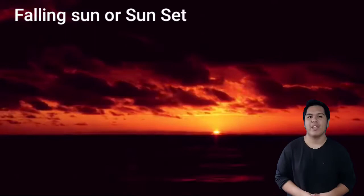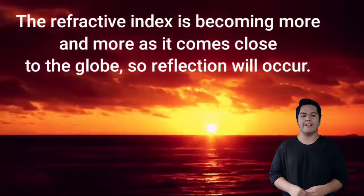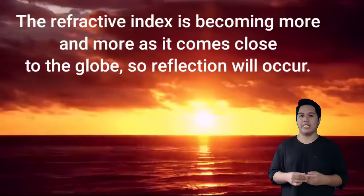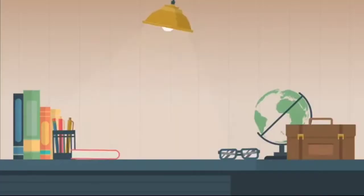One very practical example of refraction is the setting sun. When the light waves coming from the sun are experiencing the seven layers of the sky, they are having different refractive indices. The refractive index is becoming more and more as it comes close to the globe, so reflection will occur. When we see the sun in the horizon, it is slightly lower than the real position. Or when the sun is setting, we sometimes see its very deformed image. The reason for this is when light waves are coming from the sun, they are experiencing our environment. Thus, refraction will occur. As the atmosphere is not fixed, these variations cause the image to deform.